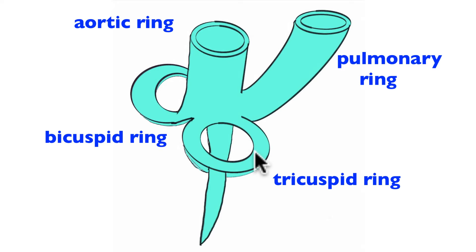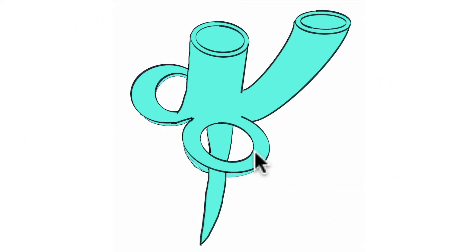Once again, this fibroskeleton is providing support for the heart, and the fibroskeleton is also providing points of attachment for cardiac cells, myocardial cells, cells of the heart muscle.